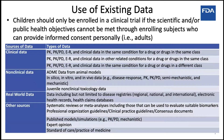The draft guideline also expands on the types of existing data that could be used to support an extrapolation approach. Historically, one considered the same disease and same drug, but the guideline greatly expands on data types — including data from related diseases or drugs in a different class, non-clinical data, real-world data such as disease registries, electronic health records, and claims databases. A comprehensive review of existing data is critically important because we have an ethical obligation to consider extrapolation, as it may lead to fewer pediatric patients needing to be enrolled in clinical trials.